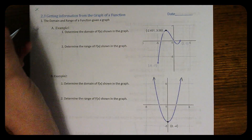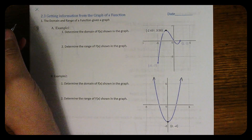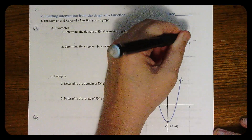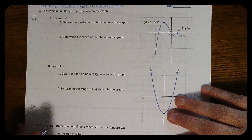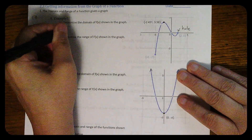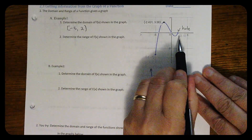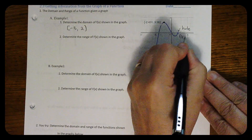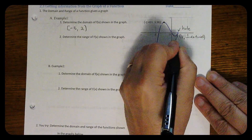We're going to continue with our look at graphs and getting information from the graph. For review, there's a hole right here, so you might want to pause the video and see if you can state the domain and the range. The domain is negative 5 to 2, but with parentheses, because at 2 it's undefined — there is no point there, there's a hole.